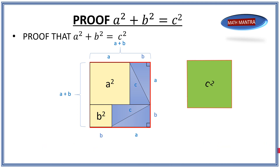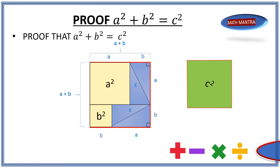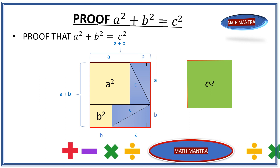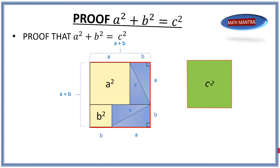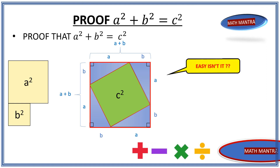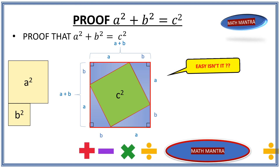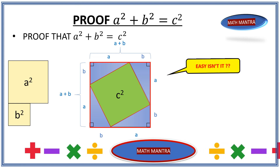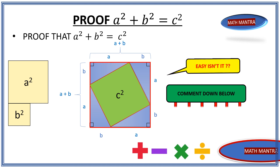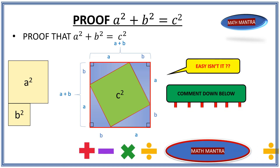Beautiful, isn't it? Let's move it back and see one more time how it works — moving A² and B² out, rearranging the triangles, and moving C square back in. So there's one more way to prove the Pythagorean theorem — it proves itself beautifully. I hope you liked this video, and if you enjoy this kind of content, please subscribe to our channel. Thanks, and hope to see you in the next video.